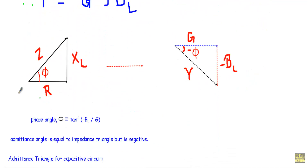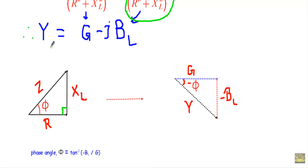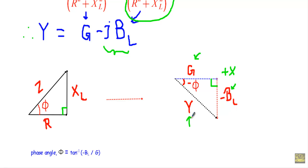In the impedance triangle, resistance is on the positive x-axis, reactance on the vertical axis, and impedance Z along the hypotenuse. For the admittance triangle of Y = G − jBL, we place conductance G on the positive x-axis. Since the imaginary component is negative, we plot −BL in the negative vertical direction. The hypotenuse then represents the admittance Y.